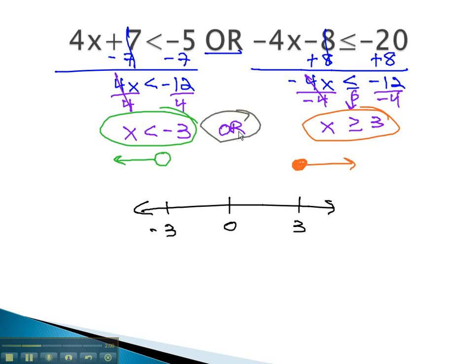Because this is an OR inequality, we only require one of them to be true, at least one. So wherever we see a graph, that's going to make it onto our final number line. So we have an open circle at negative 3 going down and a closed circle at 3 going up. The only thing that doesn't make it into the final graph is the space in the middle where neither one works.